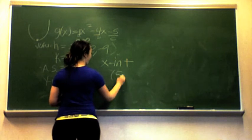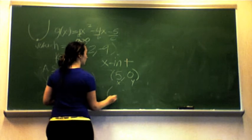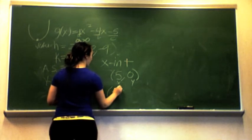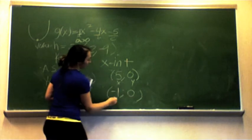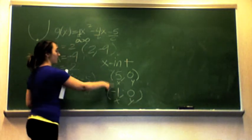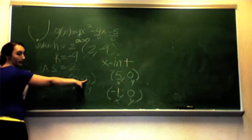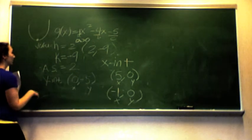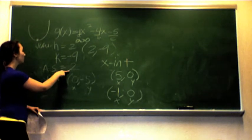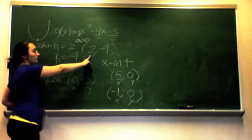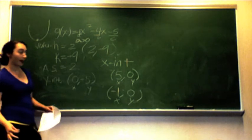So our points are (5, 0) and (−1, 0) for the x-intercepts. Our axis of symmetry is x = 2, and our vertex we found to be (2, −9). Now at this point, we're ready to start graphing, and we remember that the horseshoe is going to open upward.